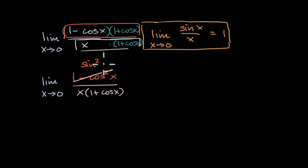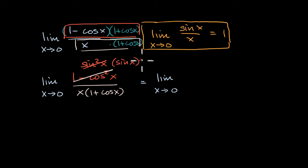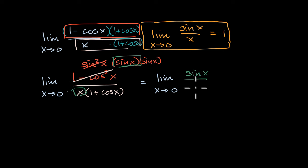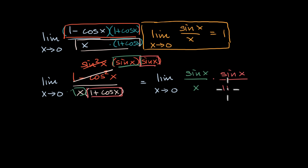So I can rewrite all of this as the limit as x approaches zero. And let me rewrite sine squared of x as sine of x times sine of x. I'll take the first sine of x and put it over x — so sine of x over x — times the second sine of x over one plus cosine of x.